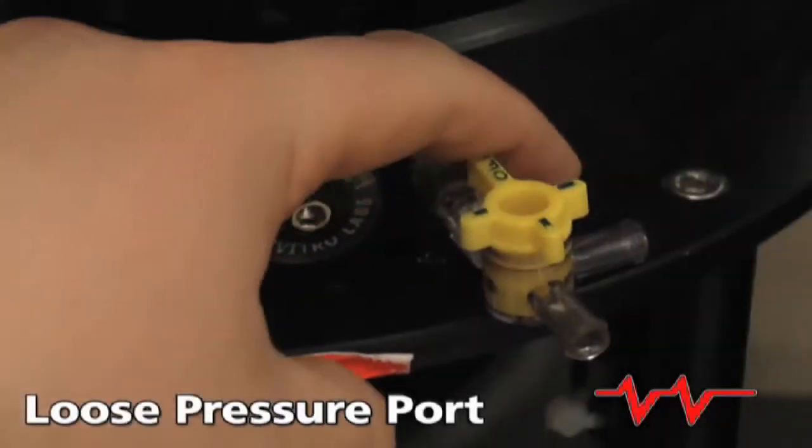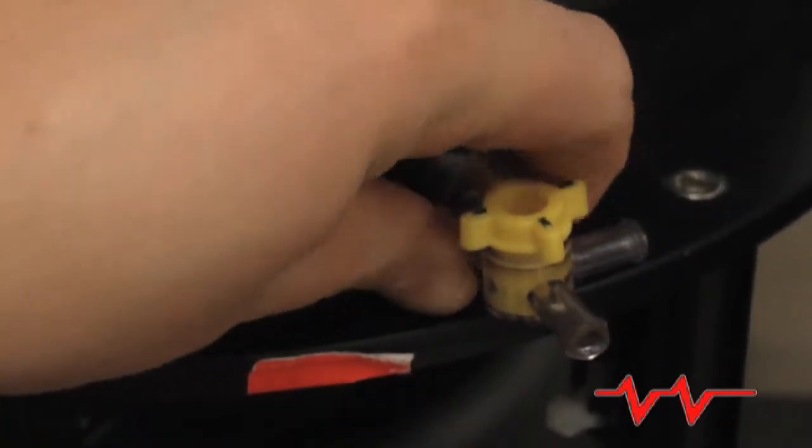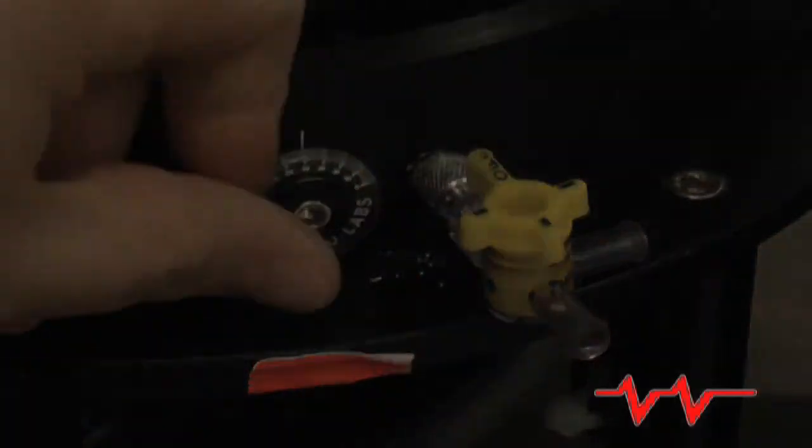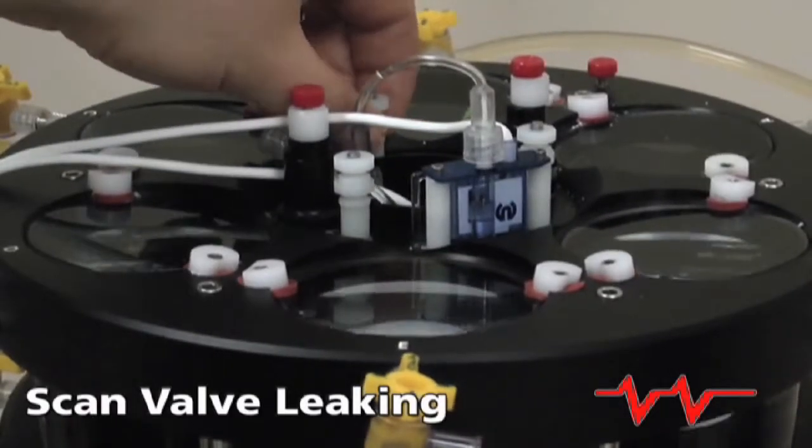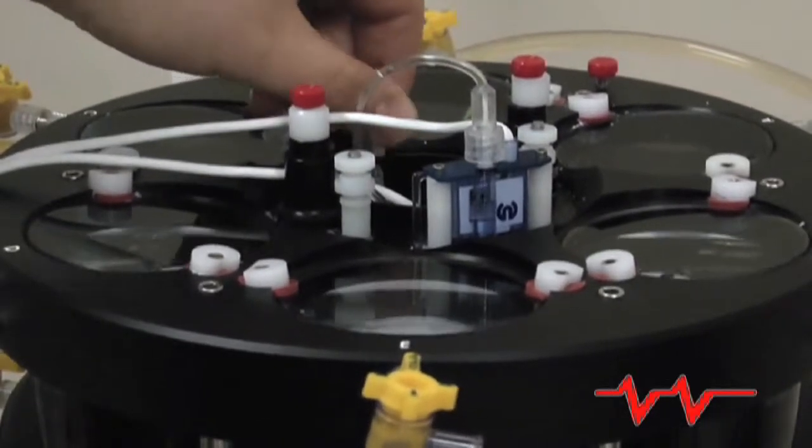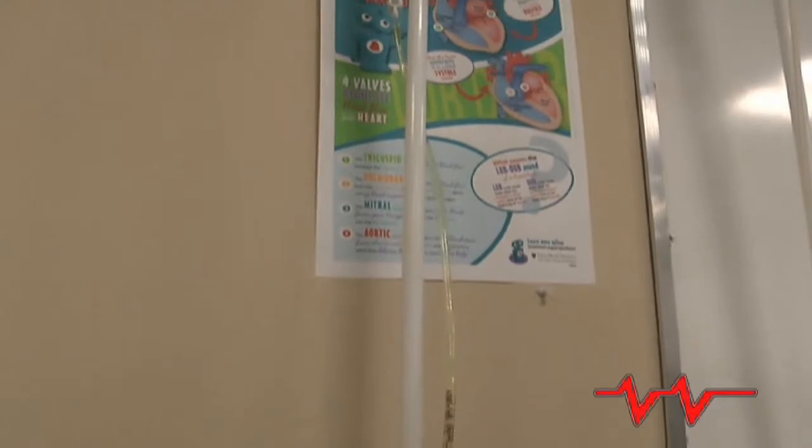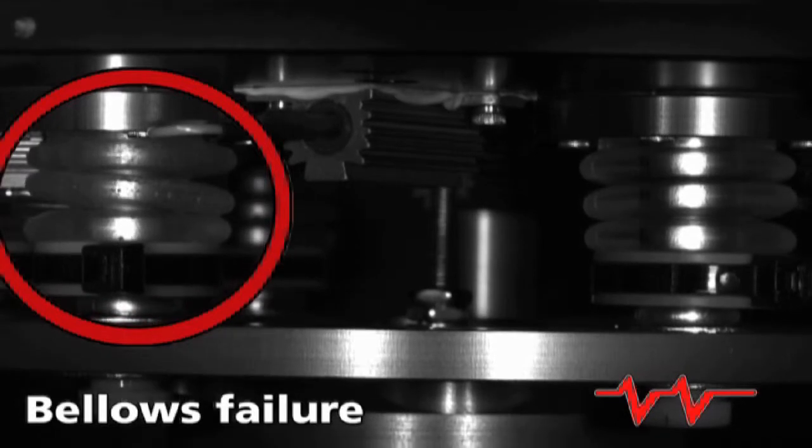Drain ports can come loose and allow the entrance of air. The scan valve may be leaking allowing air to get in. The static head may not be high enough. When the bellows start to wear, air can penetrate small cracks in the silicone.